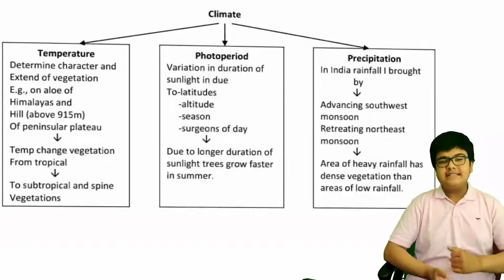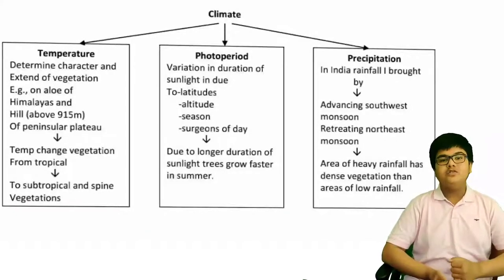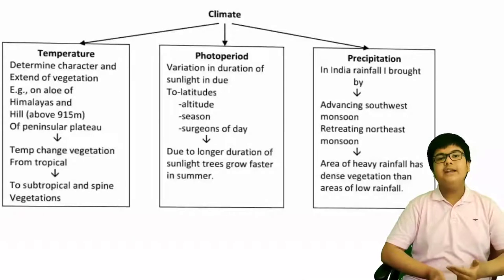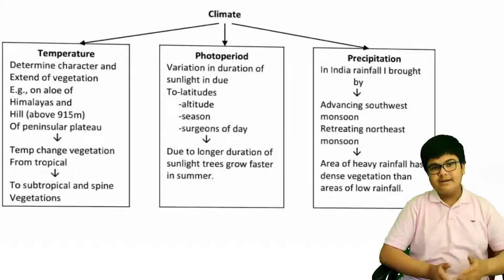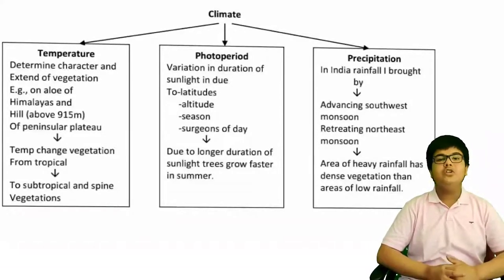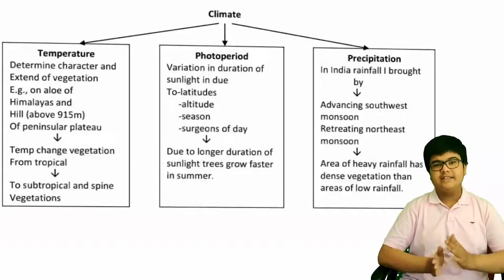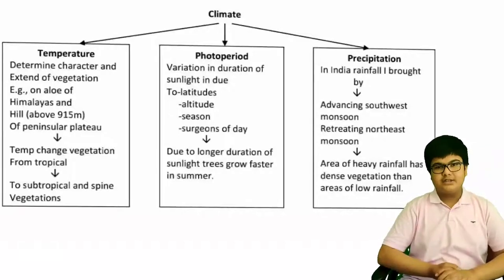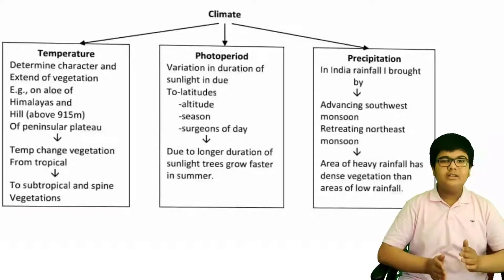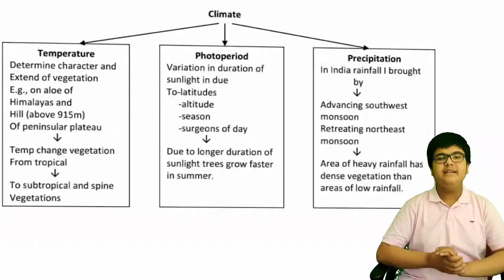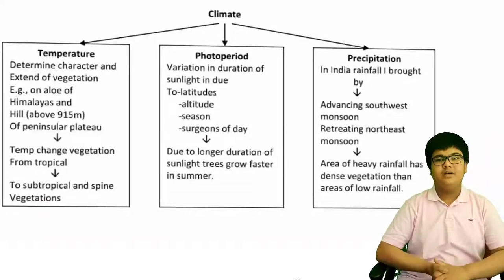Second, photoperiod means the duration of sunlight, which is affected by latitude, altitude, season, and duration of the day. Due to longer sunlight in summers, trees grow faster; in winters, shorter sunlight means slower growth. Third, precipitation refers to the amount of rainfall — areas with heavy rainfall have denser vegetation than areas with less rainfall.